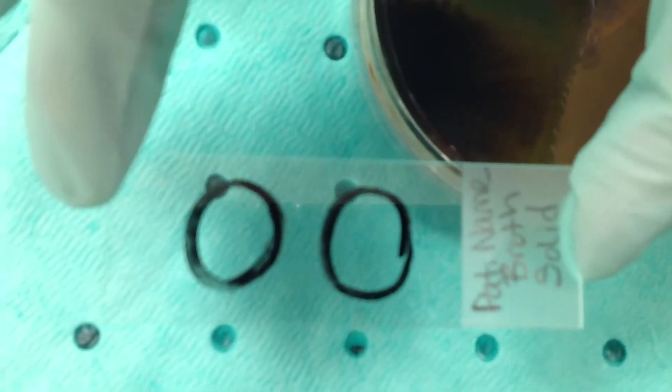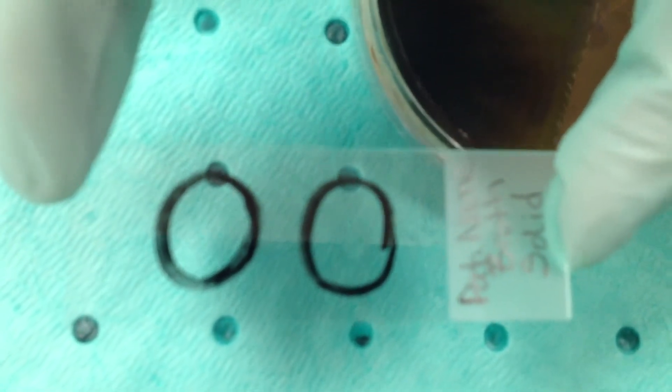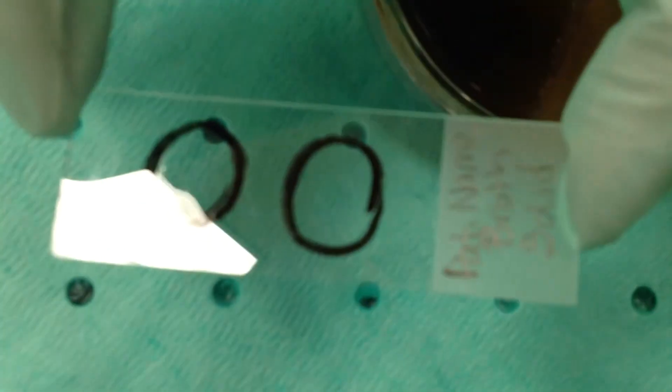Once it dries you should see a very thin film. Of course it's not dried quite yet but based on the thickness of the film you should have a good idea whether or not your smear is going to be too thick or too thin.